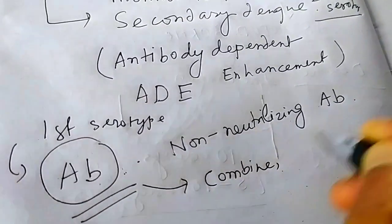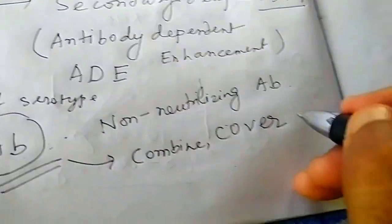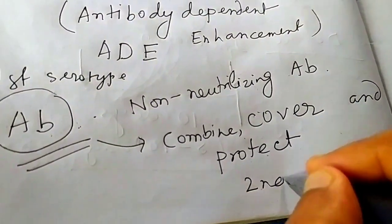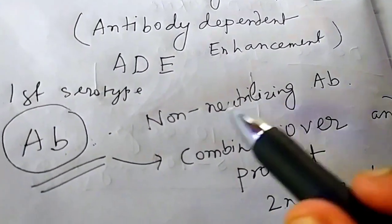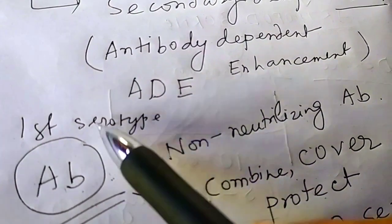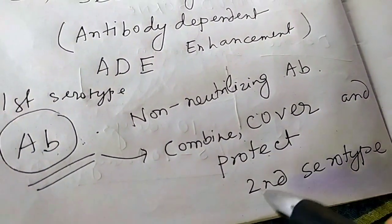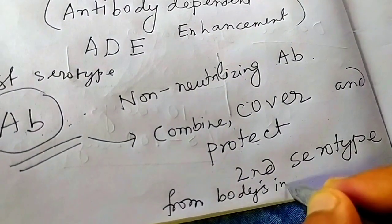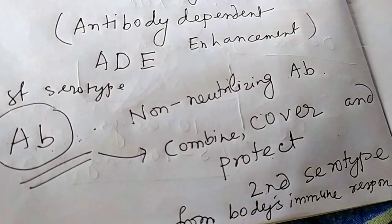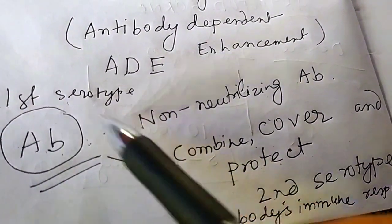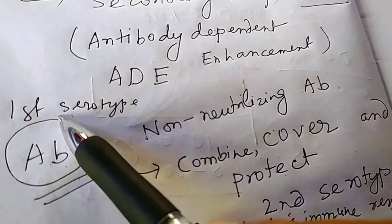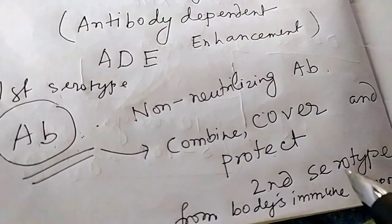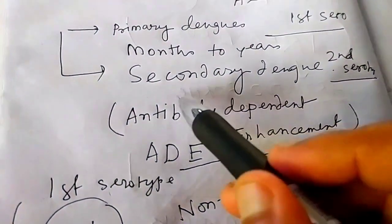They will combine, cover, and protect the second serotype. The non-neutralizing antibody which is developed against the first serotype will combine, cover, and protect the second serotype from the body's immune response. So this is antibody-dependent enhancement, and this is secondary dengue.